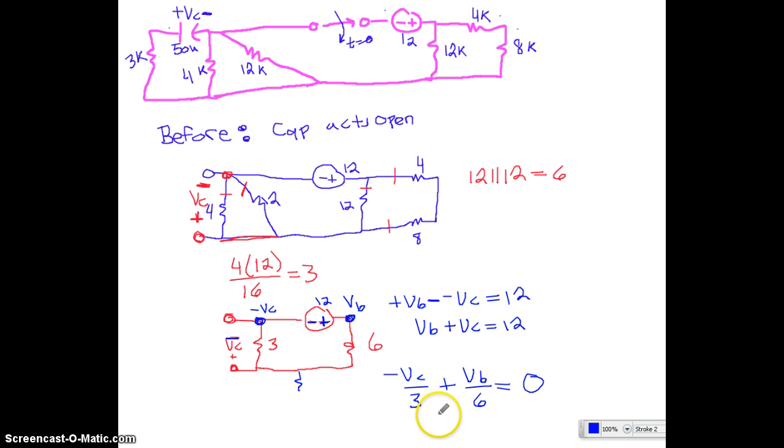So this is going to give us 2VC is equal to VB, which we can go ahead and plug back up in here. And we will see that VC is equal to 4. Because we'll have 2VC up here subbed for the VB, and then that's going to turn into 3VC. We'll divide the 3 away into the 12, and we'll get 4.